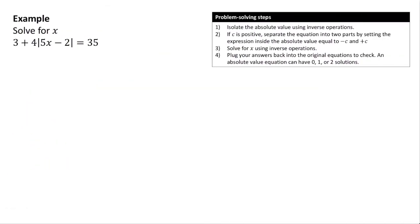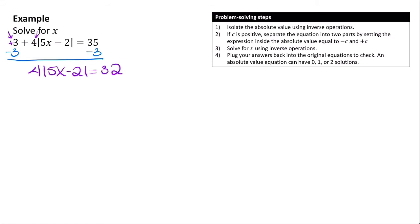Now let's try a more complex example where the absolute value has both a coefficient of 4 and an added 3. We need two inverse operations to isolate it. Following reverse order of operations, we add and subtract before we multiply or divide. So we first subtract 3 from both sides: 4|5x minus 2| = 35 minus 3 = 32. Then we divide both sides by 4: |5x minus 2| = 8.